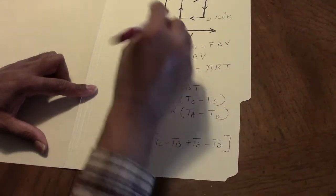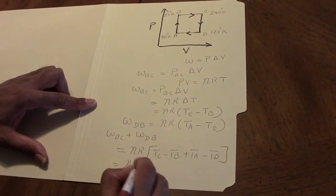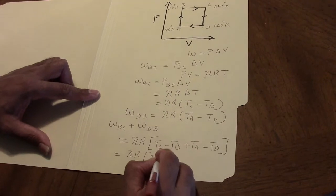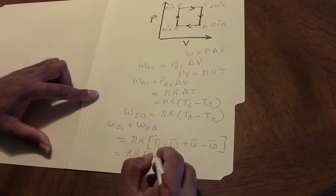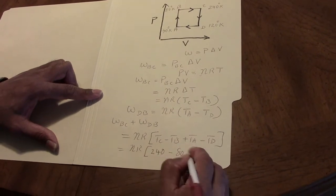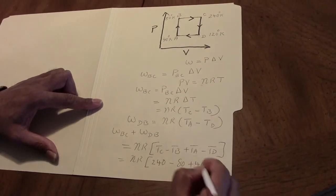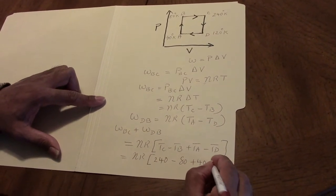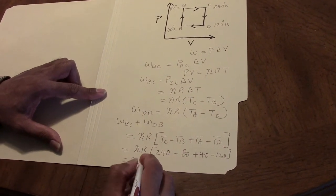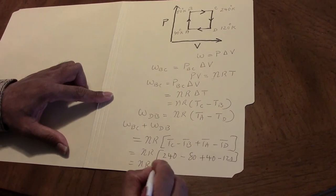and this is NR(TC minus TB plus TA minus TD) and we do know those temperatures and this is NR(240 minus 80 plus 40 minus 120) and this is NR times 80.